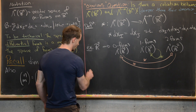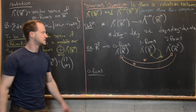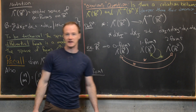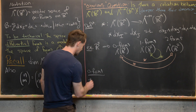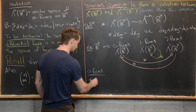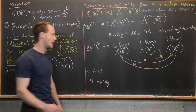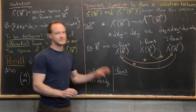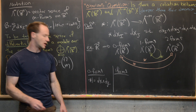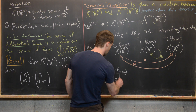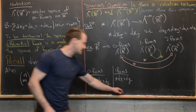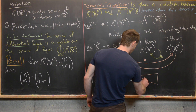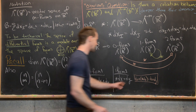Looking at zero forms first: they're spanned by just the number one, since we have an empty multi-index. So all we need to do is decide what the star operator does to the number one, and that's clearly just dx wedge dy. Now for one forms, which are spanned by dx and dy. If we do star dx, we'll end up with dy — because our goal is for dx wedge star(dx) to equal dx wedge dy, which is exactly what we get.